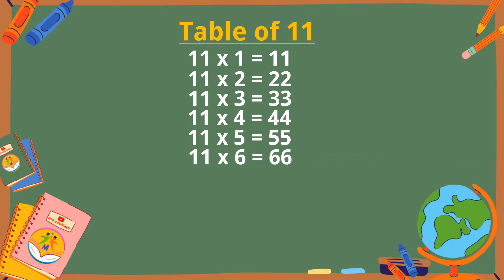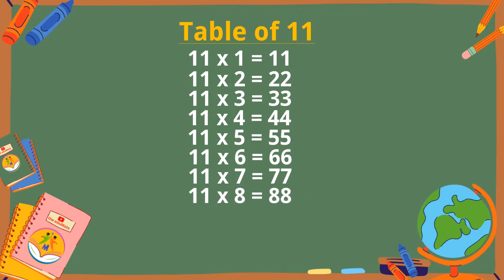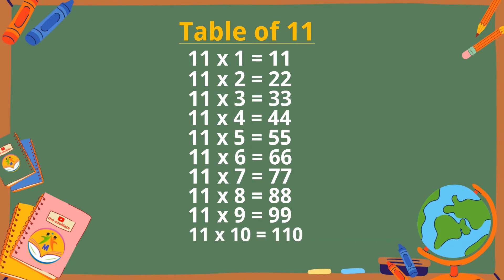11 sixes are 66. 11 sevens are 77. 11 eights are 88. 11 nines are 99. 11 tens are 110.